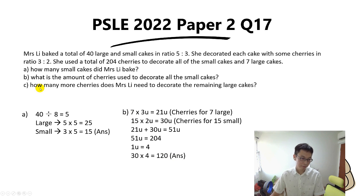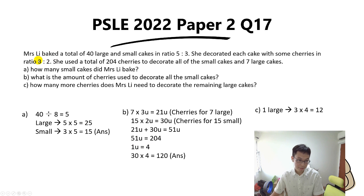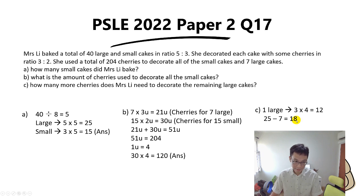For the last part, the question asks how many more cherries Mrs Lee needs to decorate all the remaining large cakes. One large cake needs 3 units, and one unit is 4, so 3 times 4 gives 12 cherries per large cake. The remaining large cakes are 25 minus 7, which is 18. So 18 times 12 equals 216 cherries. That's the answer.